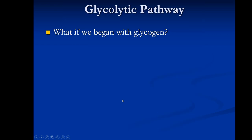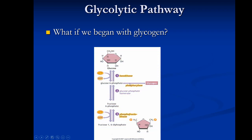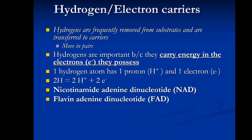If we begin with glycogen instead of glucose, the process is similar but different at the start. A separate enzyme called phosphorylase converts glycogen directly to glucose-6-phosphate, bypassing the first ATP investment step. This means we only have to invest one ATP instead of two, and we still make four ATP — giving a net of three ATP when starting from glycogen.